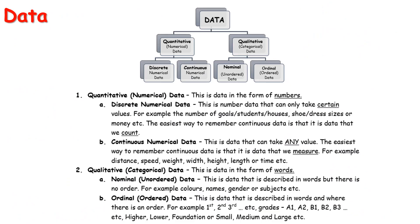In statistics, when we talk about data we just mean information, and this information can be split into different types. The two high-level types of data, which you would have seen at Junior Cert, are numerical data and categorical data. These are also known as quantitative — that's numerical, think about quantity — and qualitative, which is more about words.